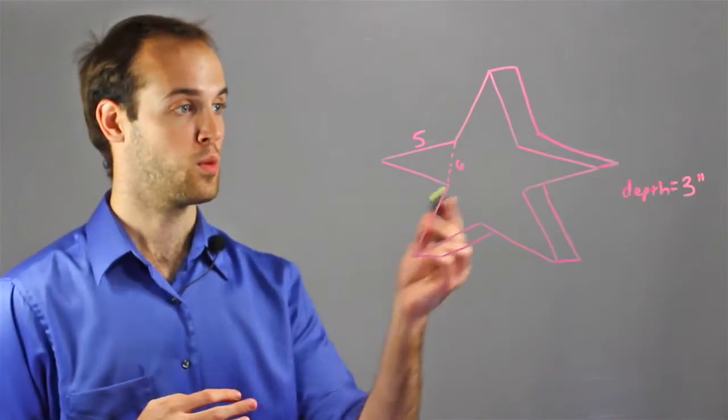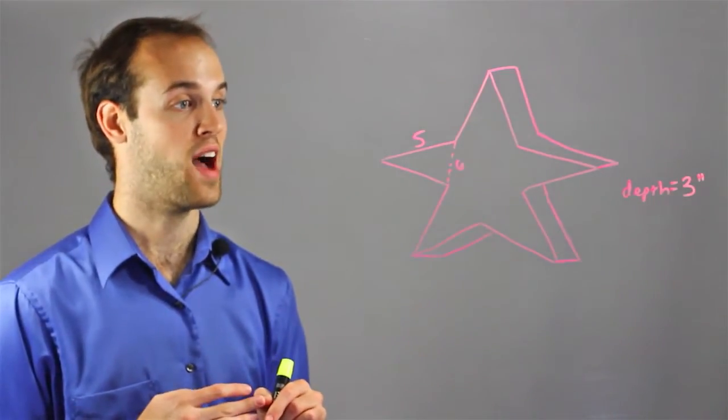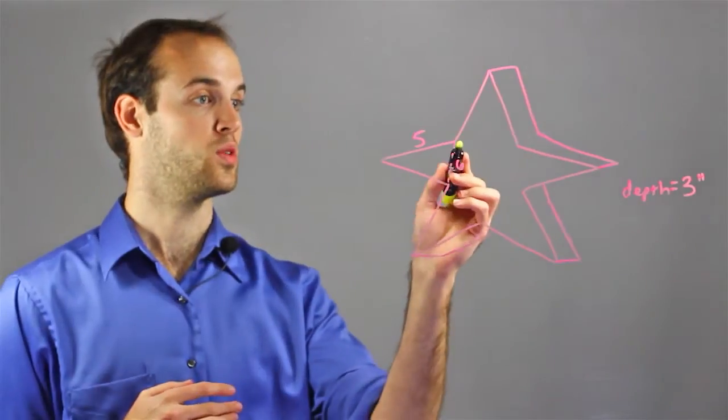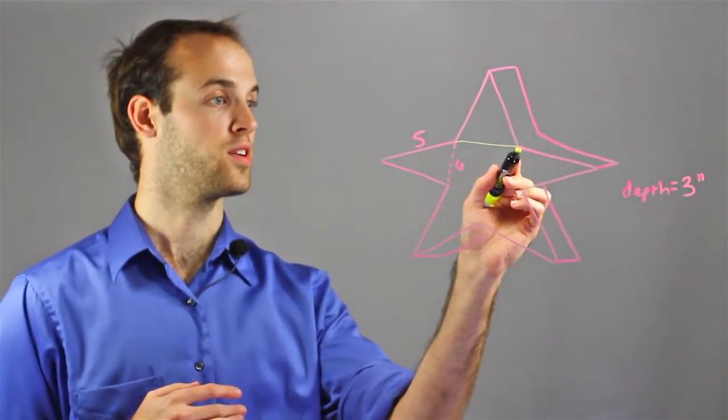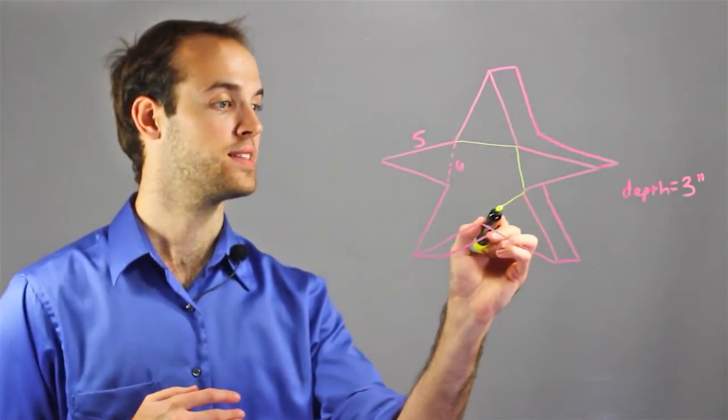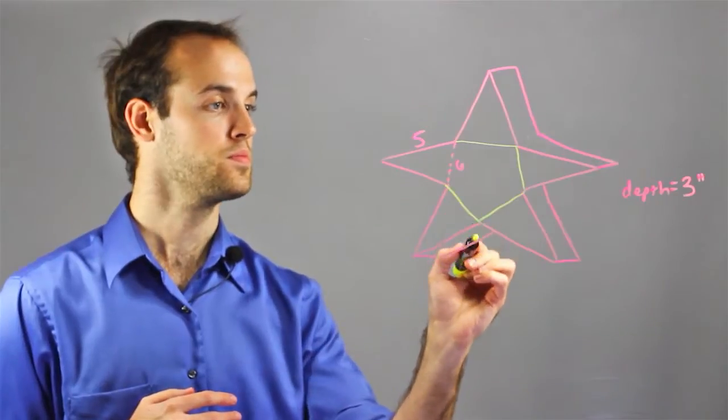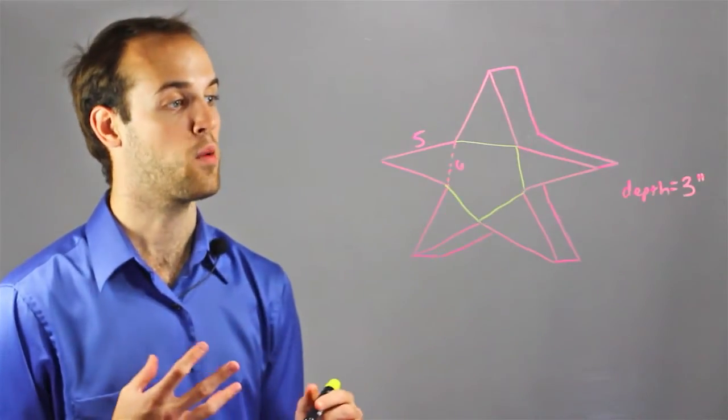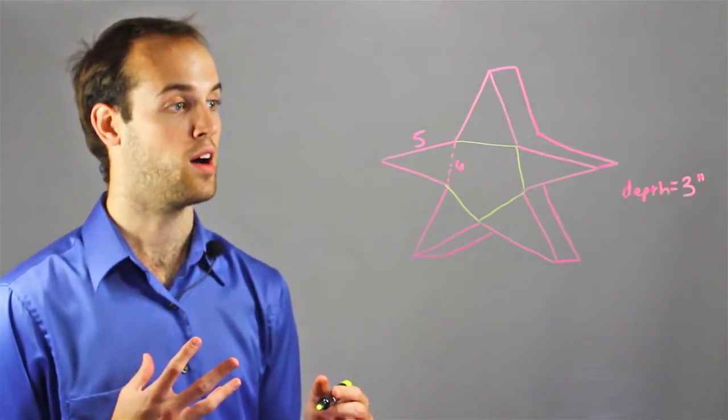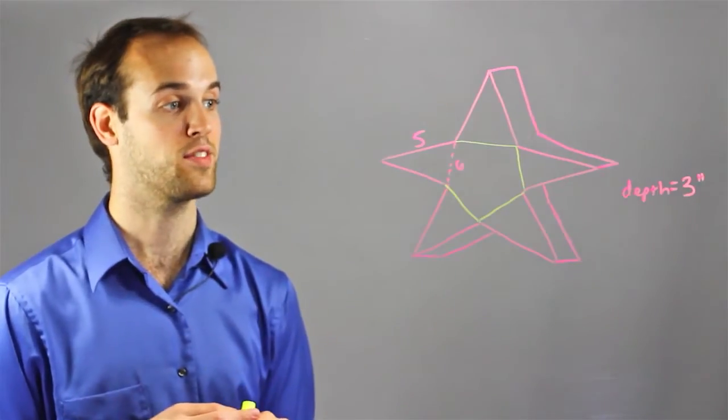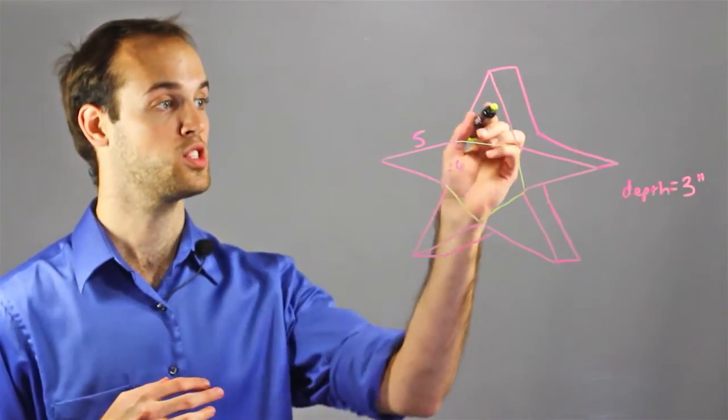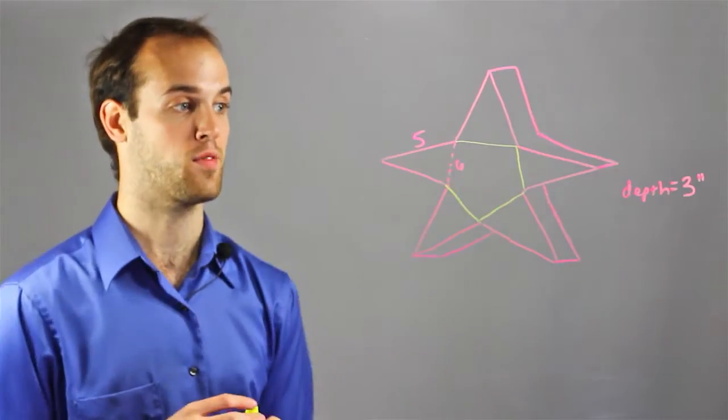For example, with this star, I know that I can divide this star into five triangles and a pentagon in the middle. So if I want to find the volume of the star, I'm going to have to find the volume of each one of these triangles and the volume of the pentagon.